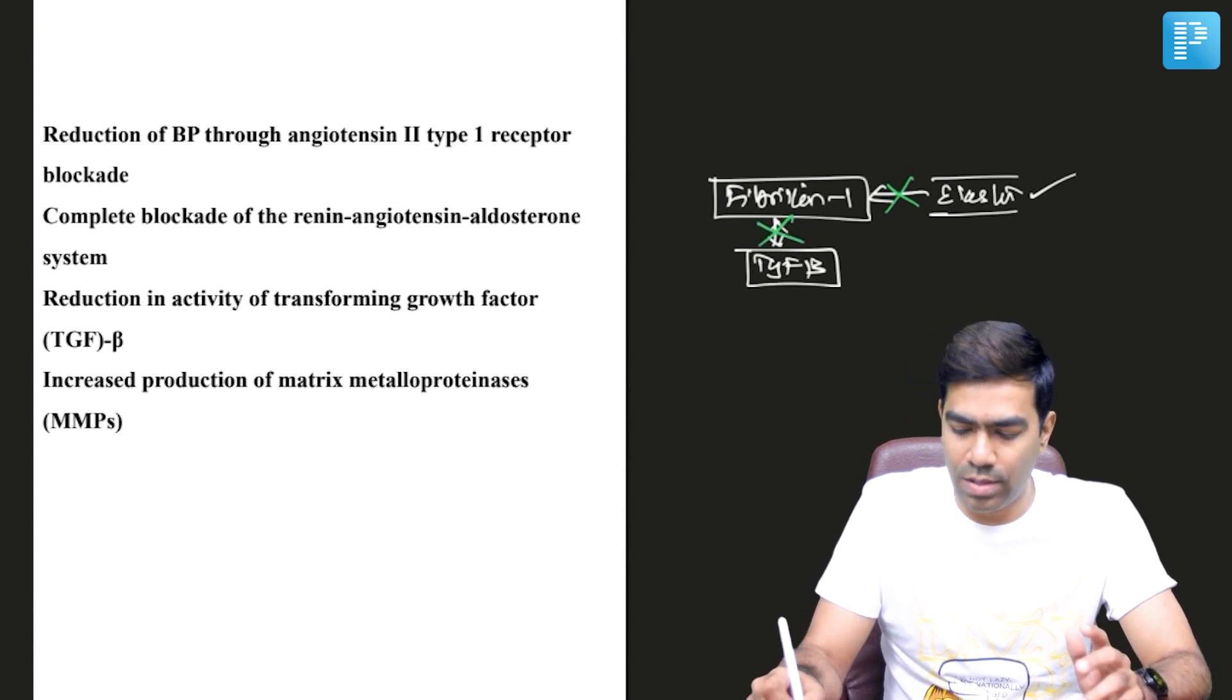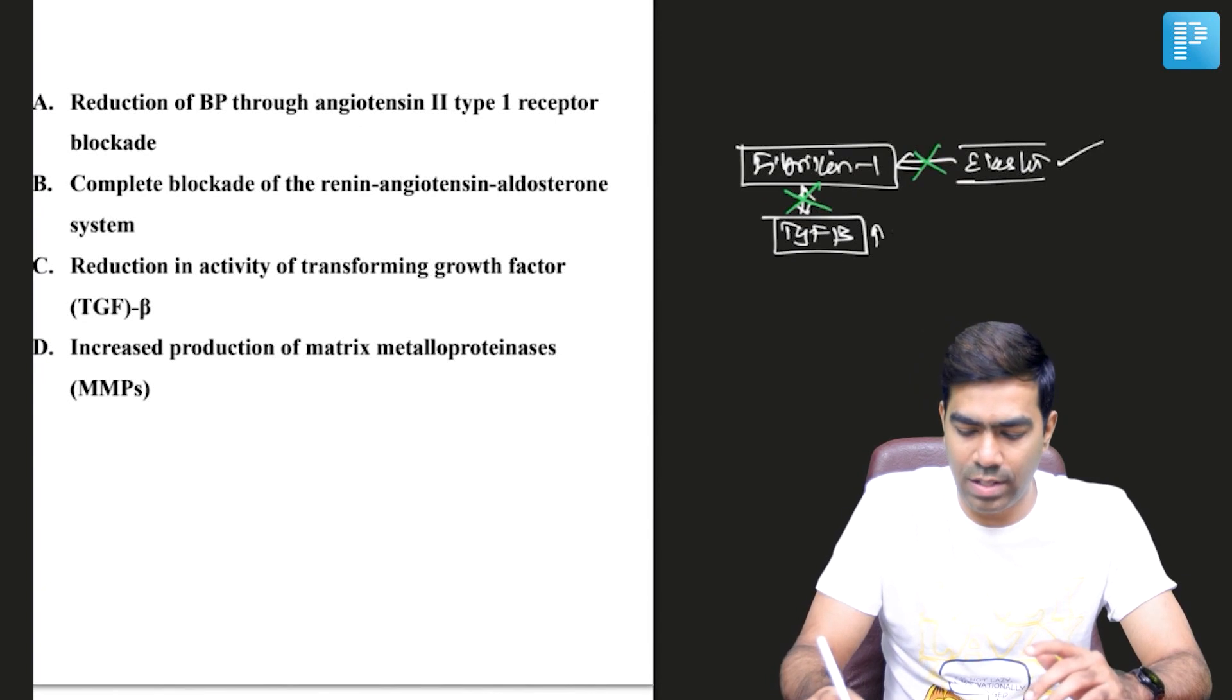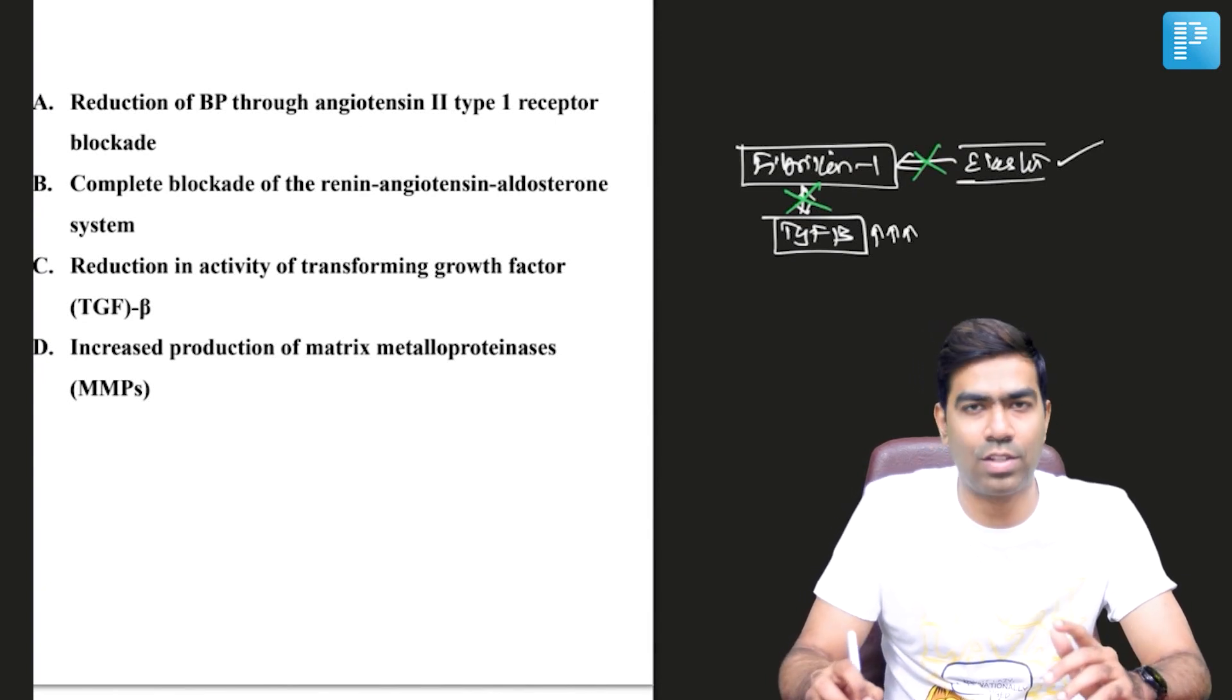Because of fibrillin-1 gene mutation in Marfan syndrome, this TGF-beta cannot bind to fibrillin-1, which results in increased local concentrations of TGF-beta, that is transforming growth factor beta.